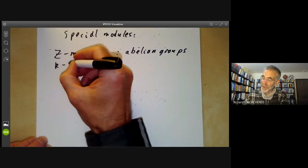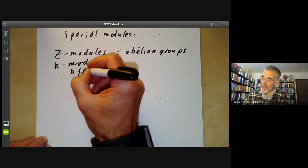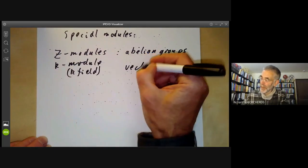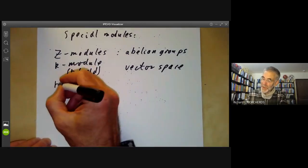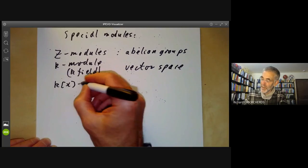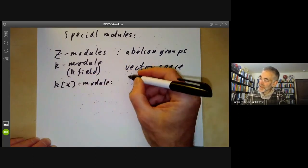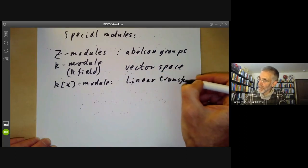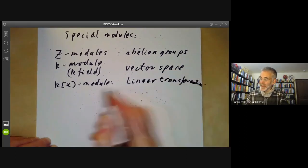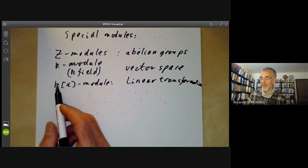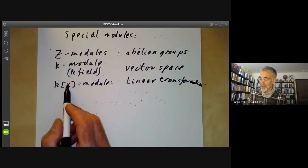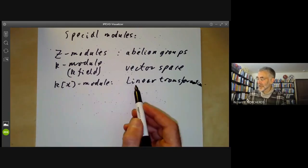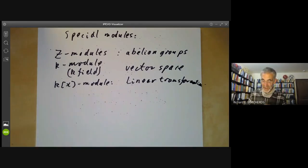A k-module for a field k is just a vector space — not surprising since we copied the definition of vector space to define modules. A module over the polynomial ring k[x] is the same as a linear transformation: such a module is first a k-vector space, and then x must act by a linear transformation. So the whole theory of linear transformations is really the same as the theory of modules over k[x].